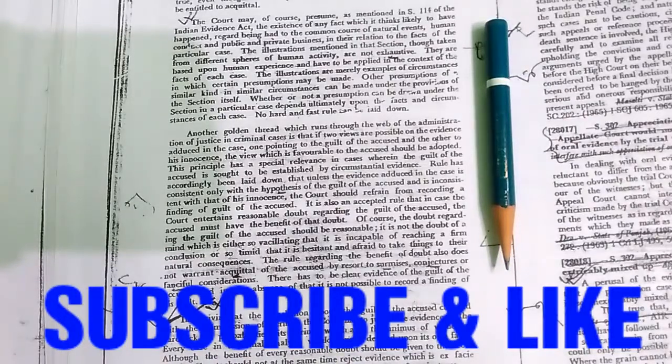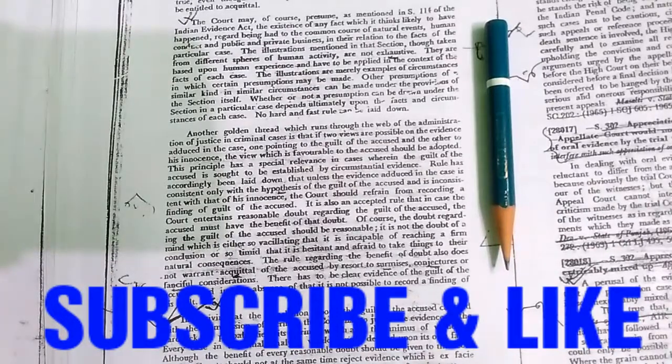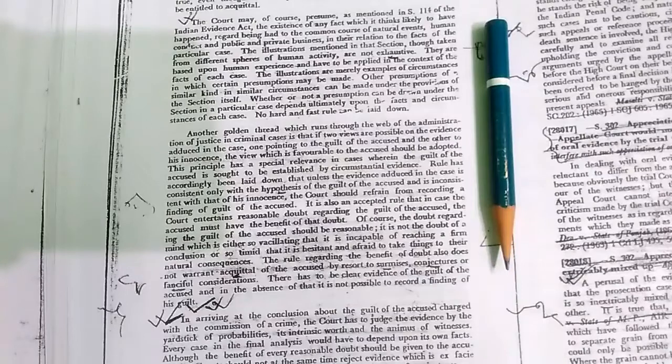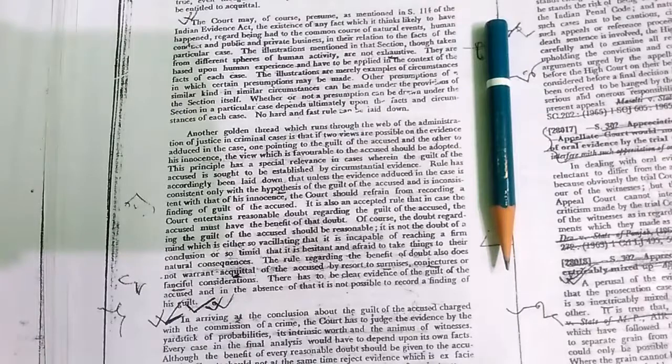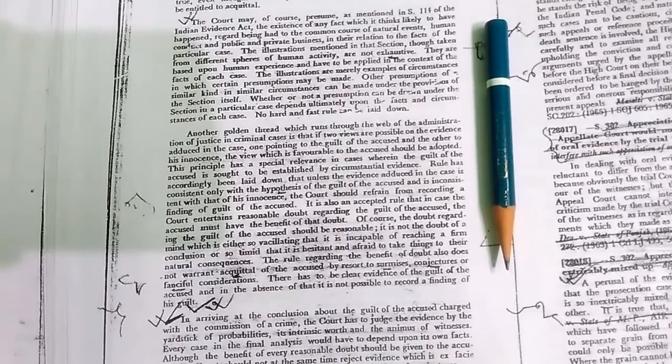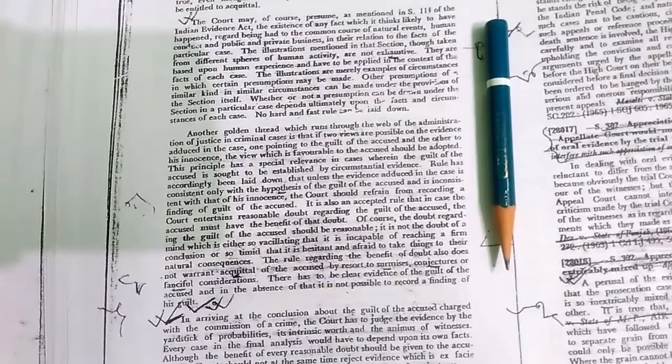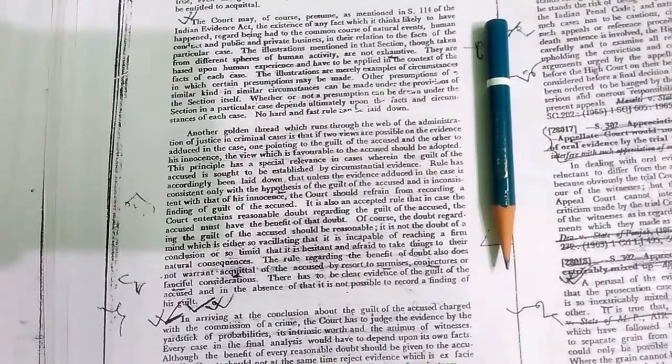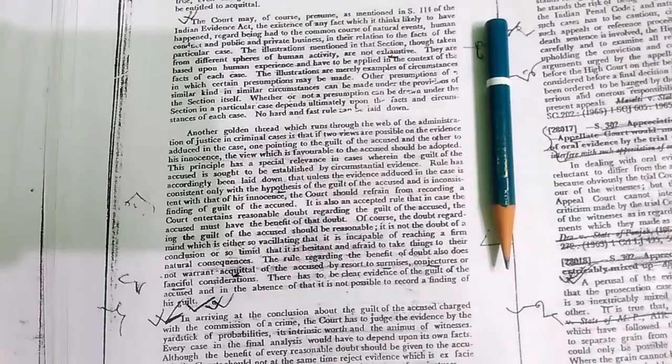There has to be clear evidence of the guilt of the accused, and in the absence of that it is not possible to record a finding of his guilt. In arriving at the conclusion about the guilt of the accused charged with the commission of a crime, the court has to judge the evidence by the yardstick of probabilities, its intrinsic worth, and the animus of witnesses. Every case in the final analysis would have to depend upon its own facts.